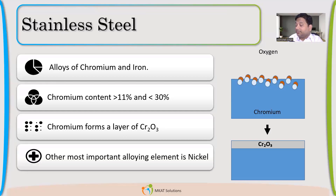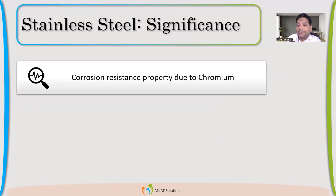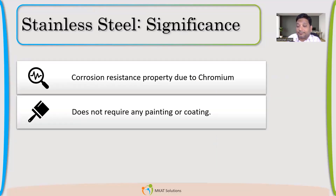Another very important alloying element in stainless steel — mainly in austenitic stainless steel — is nickel. Nickel is very, very important, and we'll talk about that. It is the reason for maintaining the steel in the austenitic zone.